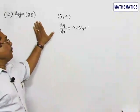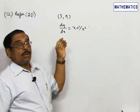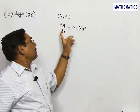Now refer to problem number 20. You are asked to find the equation of the curve passing through (3, 9) satisfying this differential equation.